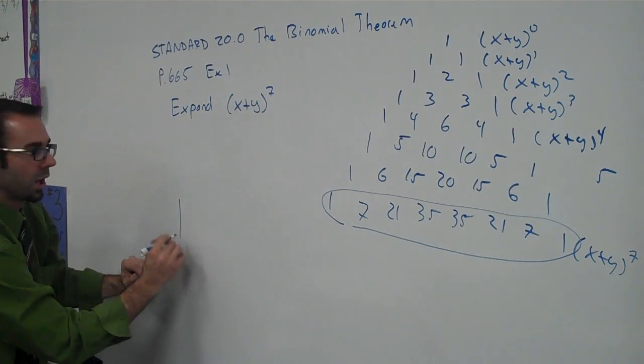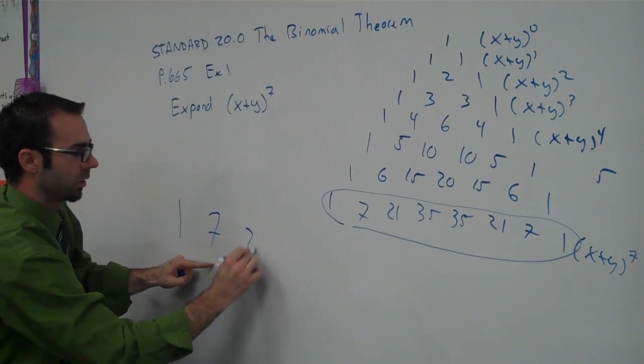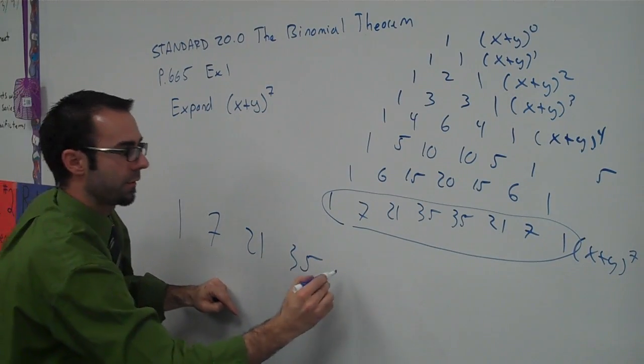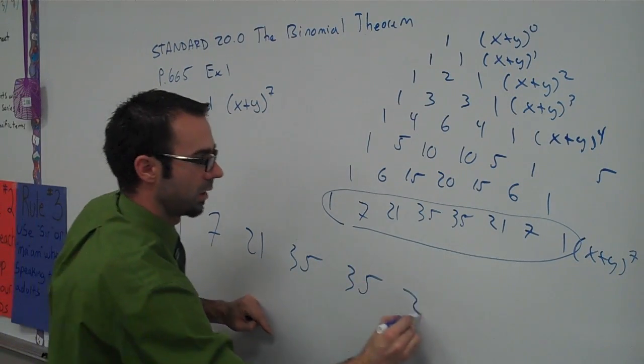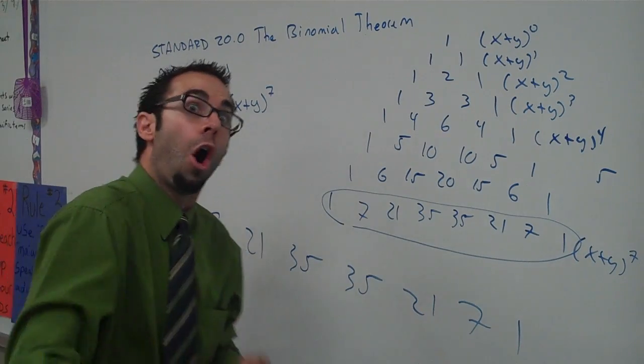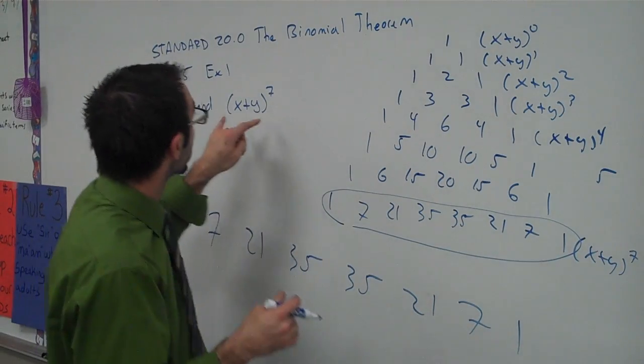So we're going to use one, seven, twenty-one, thirty-five, thirty-five, twenty-one, seven, and one. Now all we have to do is just do our variables here.